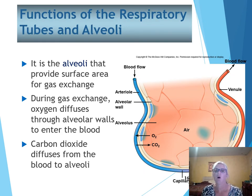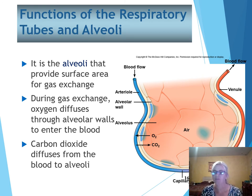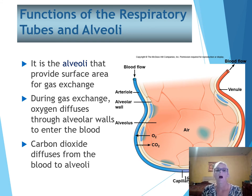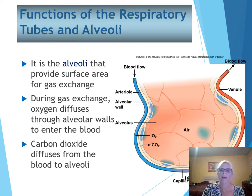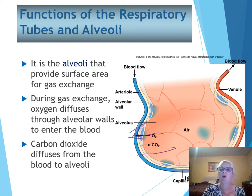Alveoli provide increased surface area to maximize the amount of gas exchange. Oxygen is going to diffuse in through the alveolar walls to enter the blood, and carbon dioxide is going to diffuse out. So we have oxygen going in and carbon dioxide being dropped off.